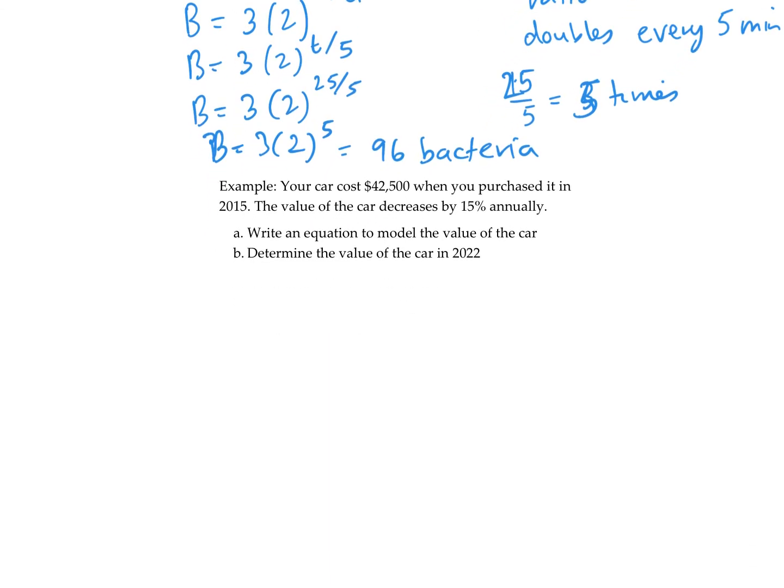In this example, we have a car that cost $42,500—that's my initial value. It's decreasing by 15%. Write an equation to model the value. Let's use V for value. V equals 42,500. It's decreasing, so we do one minus the percentage. 15% as a decimal is 0.15, so we use 0.85 to the power of t.